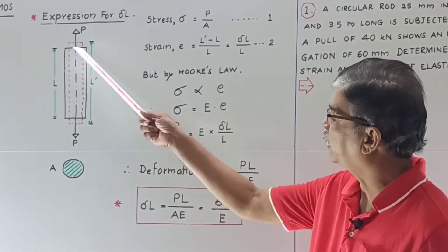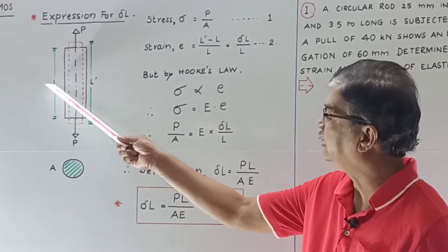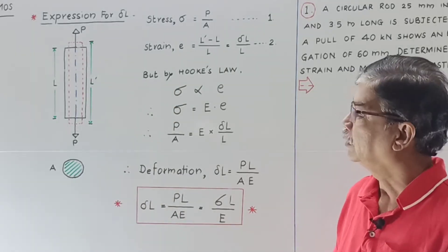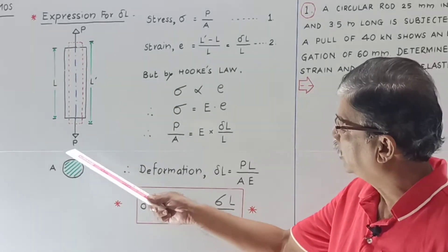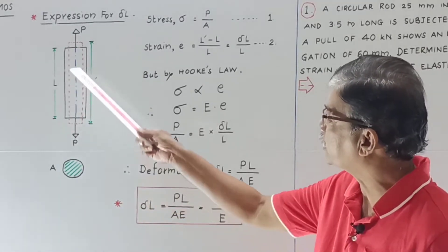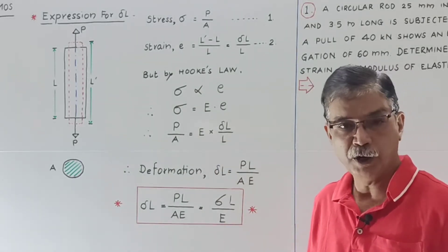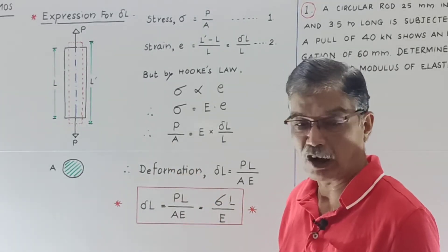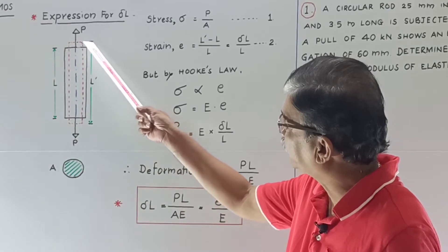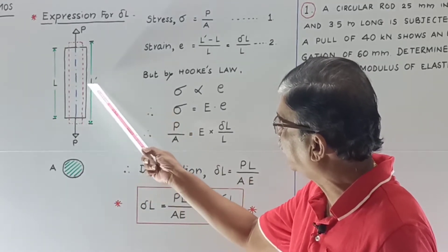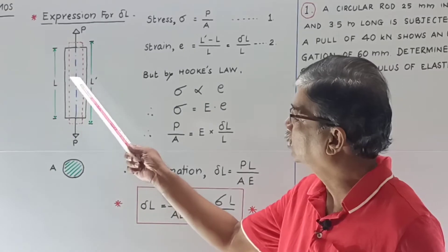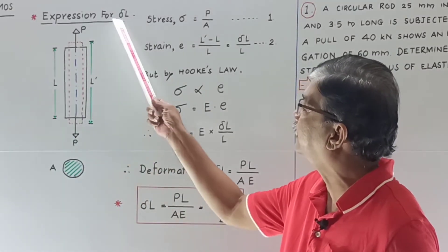For that purpose, let us consider a bar of elastic material whose original length is L and cross-sectional area is A. This bar is subjected to axial pull P. Due to this applied pull P, as it is a tensile force, we know that it will elongate and the bar elongates to final length L dash. So, final length minus original length will be nothing but deformation, that is delta L.